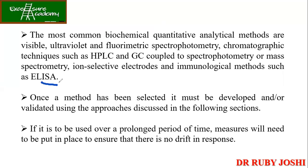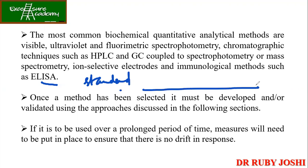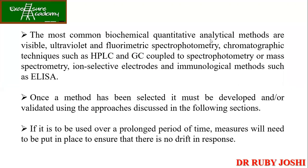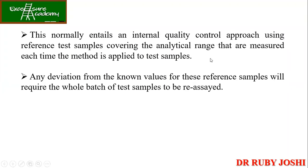For example, in the case of ELISA, since you run it every day, you can use a standard protein and run multiple tests against it. This normally entails an internal quality control approach using reference samples covering the analytical range, which are measured each time the method is applied to the test samples. Any deviation from the known values for these reference samples means the test must be repeated.